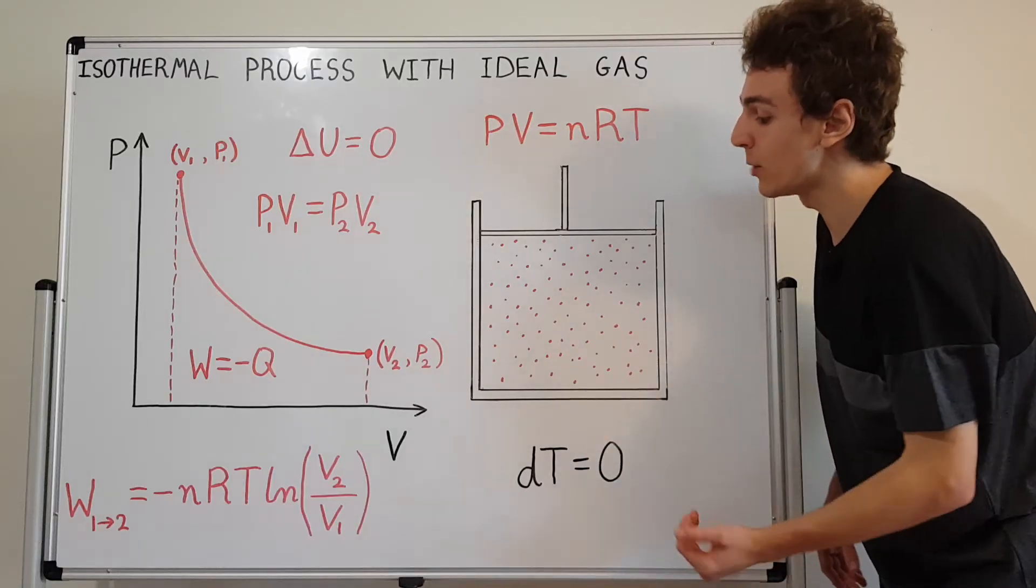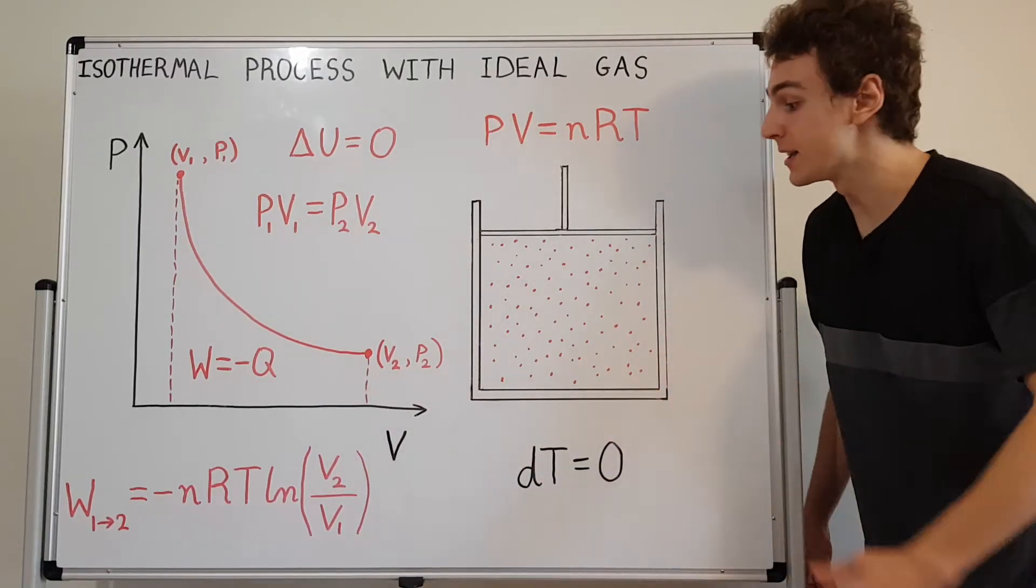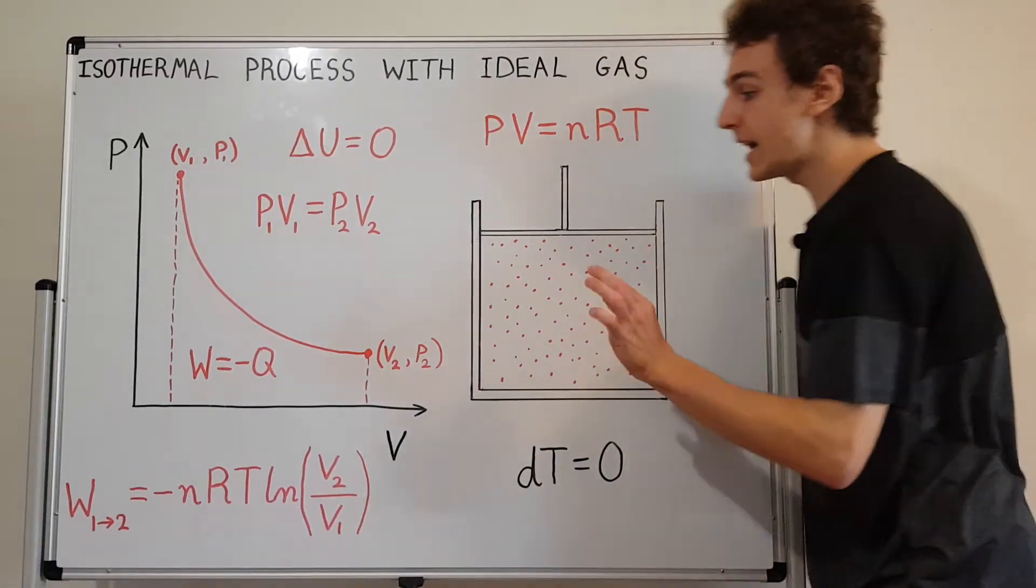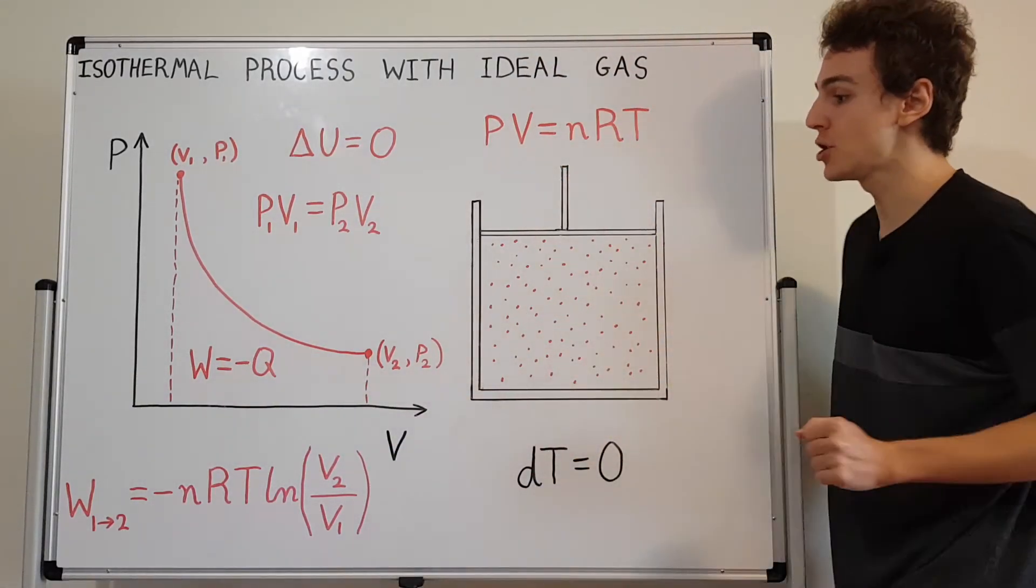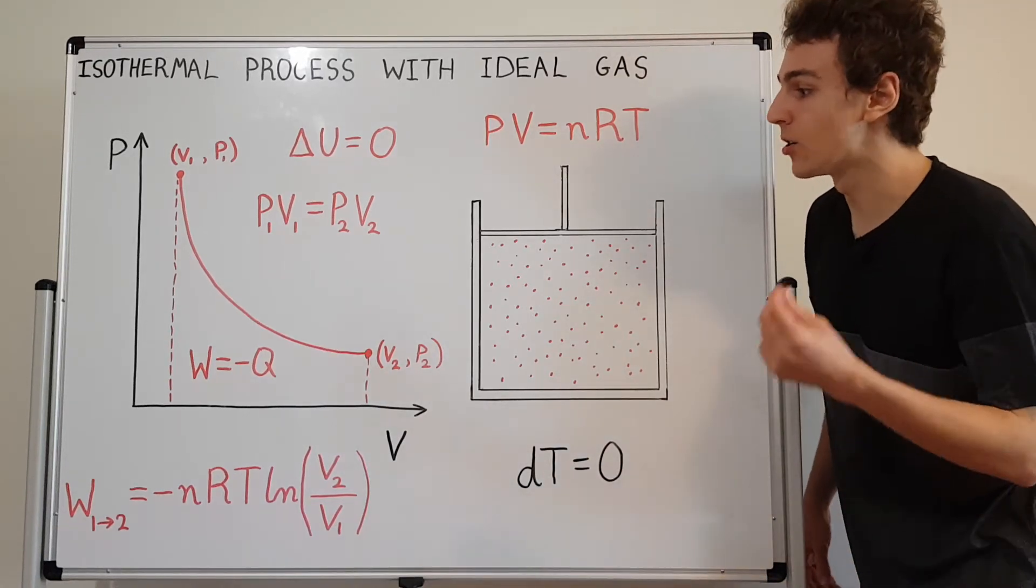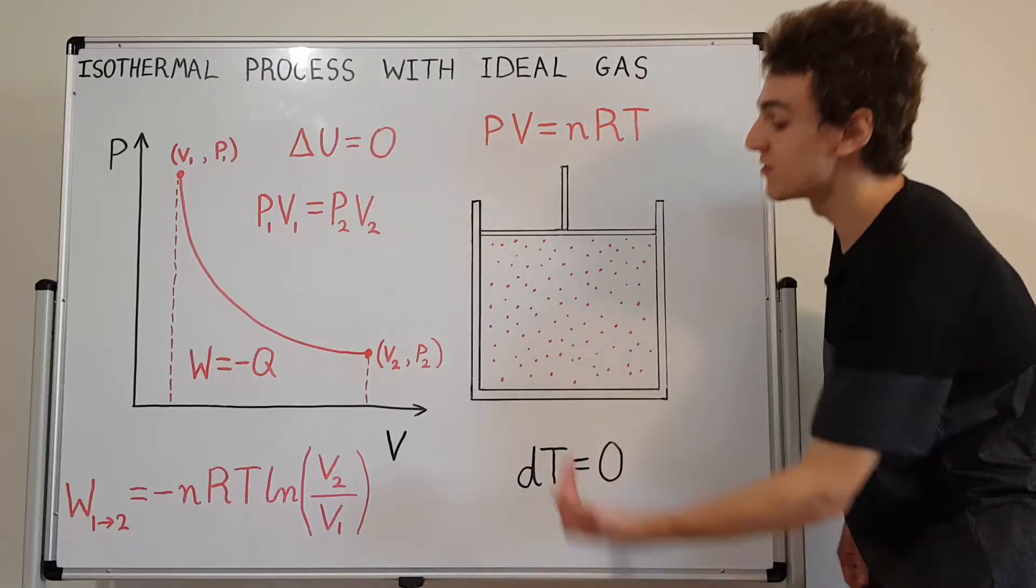So what do we have to do to compensate? We have to allow heat to flow in from the thermal reservoir. So this is not thermally isolated. Heat can flow in. And the amount of heat that flows in is actually exactly the same as the amount of work that was used during the isothermal expansion. The only difference is the sign. The sign of the heat is positive if the work is negative. Why? Because heat is flowing in.